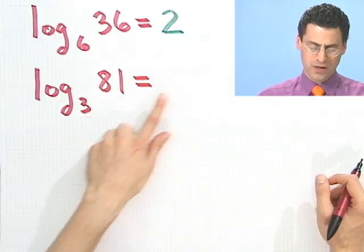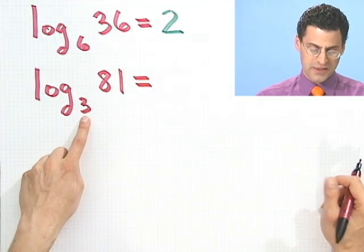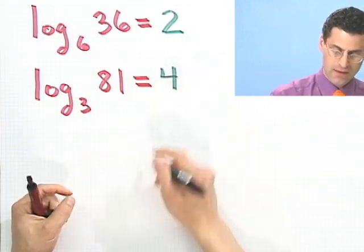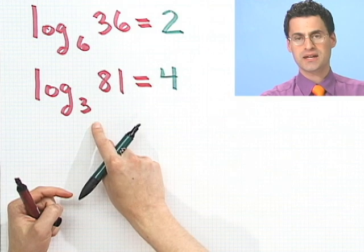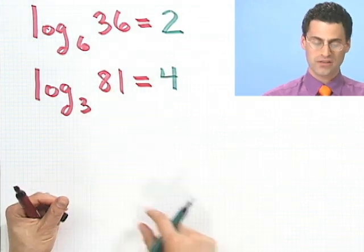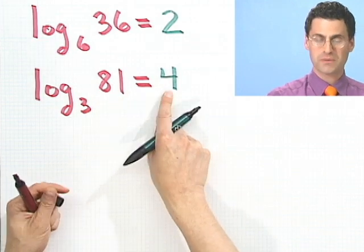Okay, well, 3 to what power gives me 81? I think it's 3 to the 4th, because 3 times 3 is 9, times 3 is 27, times another 3 actually is 81. So log base 3 of 81 equals 4.